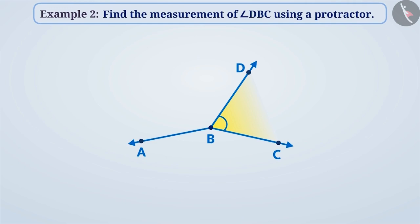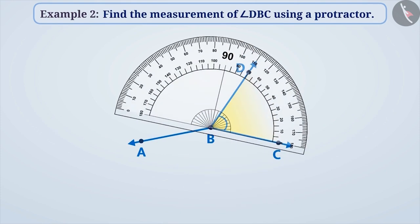If we look at angle DBC, we find that point B is the vertex of this angle and BD and BC are the sides of the angle. To find the measurement of the angle...